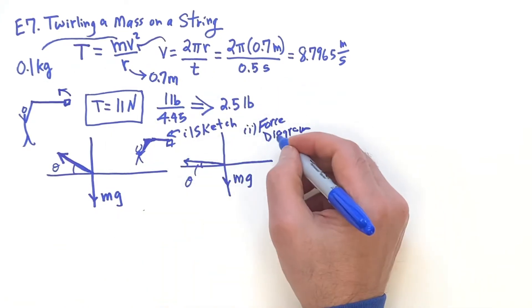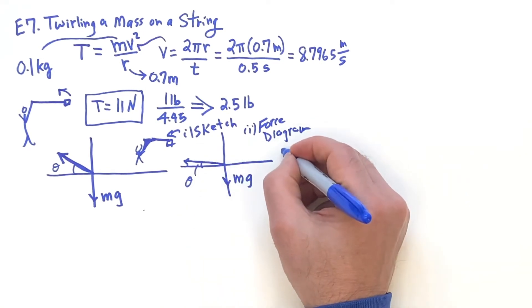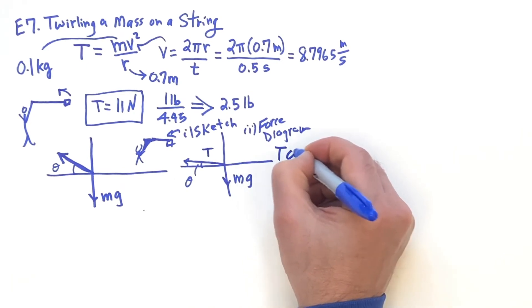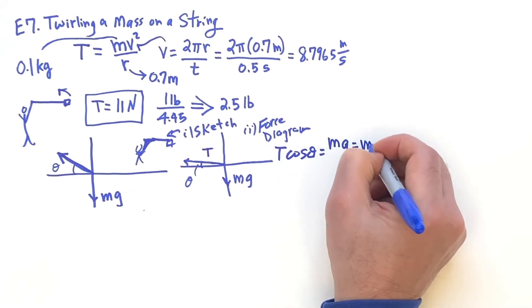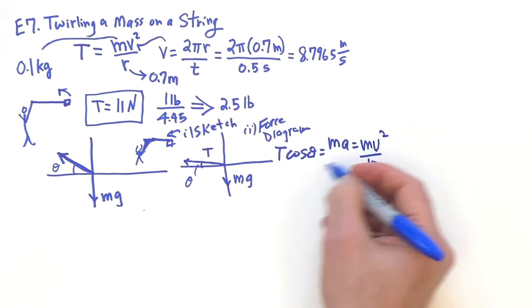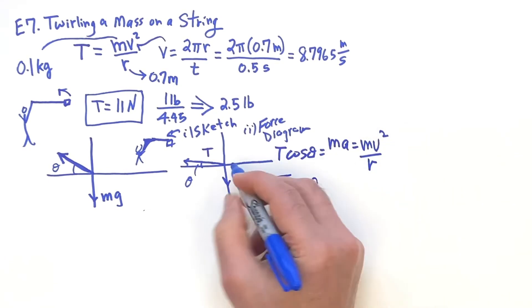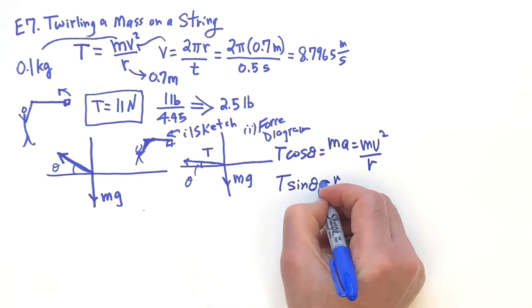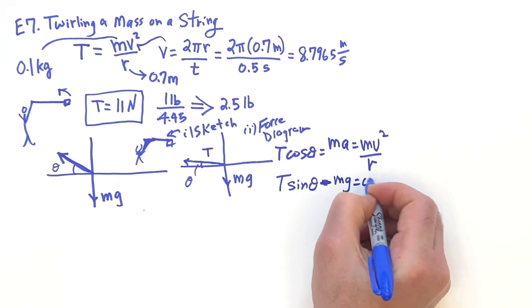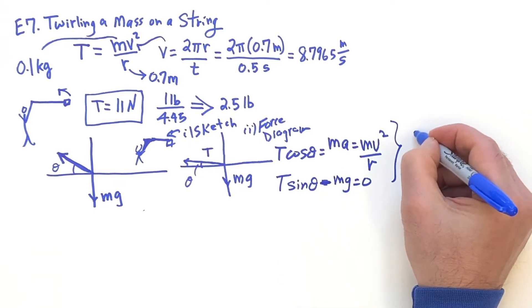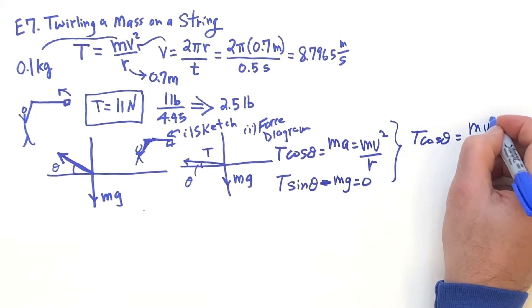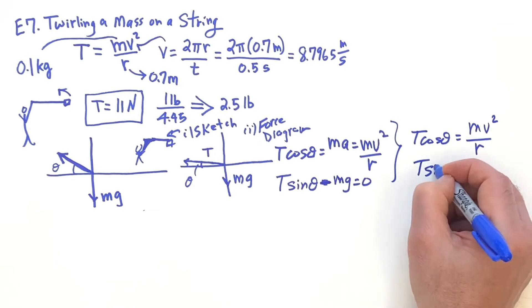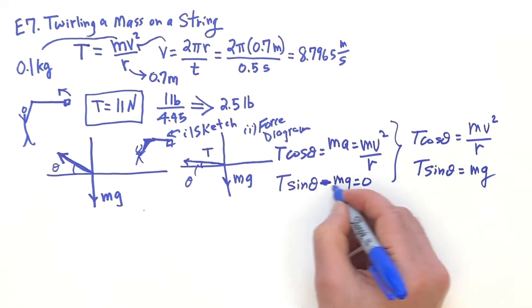The force diagram would be going toward the center. Remember the acceleration is toward the center when you have circular motion. So this is tension. T times the cosine of theta is MA, which you could then write as MV squared over R. And T times the sine of theta, going up, has to, well, I'll put down minus MG equals zero. And then we'll look at these equations and say that T cosine of theta is MV squared over R, T sine of theta is MG.